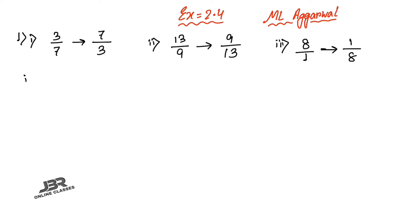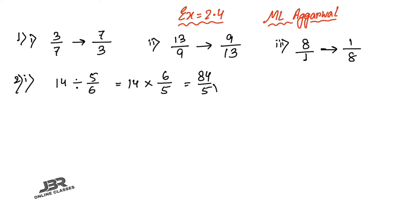Sum number 2, part 1: evaluate 14 divided by 5/6. Here it becomes 14 × 6/5. Whenever you convert the division sign into multiplication, the fraction after the sign — remember, after the sign, not before — changes into reciprocal form. So 14 × 6/5: multiply 14 with 6 to get 84, giving 84 by 5. Converting to mixed fraction: 84 ÷ 5 gives 16 whole 4 by 5. That is your answer.